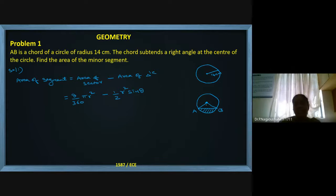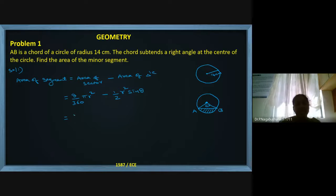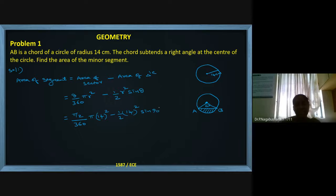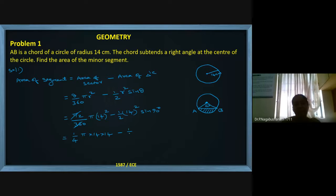The angle given is 90 degrees, which is π/2. So we have 90/360 × π × 14² minus half × 14² × sin 90°. 90 over 360 gives 1/4, so it becomes (1/4) × π × 14 × 14, minus half × 14 × 14. Sin 90° value is 1.